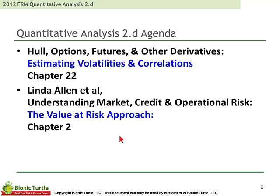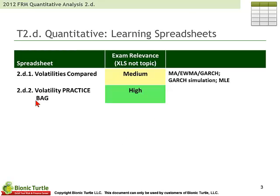So we'll look at the three basic flavors of volatility we want to know for exam purposes. As usual, I've got learning spreadsheets that accompany this content, 2D1 and 2D2, which I've tagged as high relevance for exam purposes. If you get a chance, I'd love you to open up that spreadsheet. I've called it a practice bag because I've laid out columns for each of the primary flavors of volatility we look at, and this allows you to practice with changing assumptions as much as you would like. Practice makes perfect in regard to this volatility estimate.